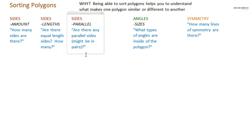Whether or not the sides are parallel. Are there any parallel sides? They might be in pairs. Parallel means that two sides, two lines, never cross. If they extend forever, they still won't cross. They run side by side straight.